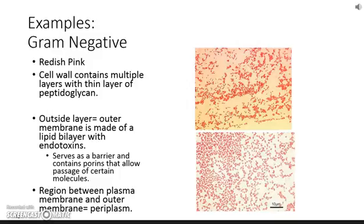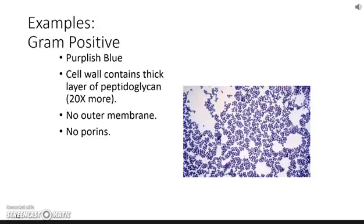Here's what gram negative cells - negative, pinkish red - look like under the microscope. Gram negative cells have a space where the peptidoglycan is, with a membrane on top and a membrane on bottom. That space between is called the periplasm. Here's what gram positive cells - positive or purple, purplish blue - look like. Remember, there's no outer membrane, just one membrane and a thick, thick layer of peptidoglycan. That thick layer is actually 20 times more than it is in gram negative cells.